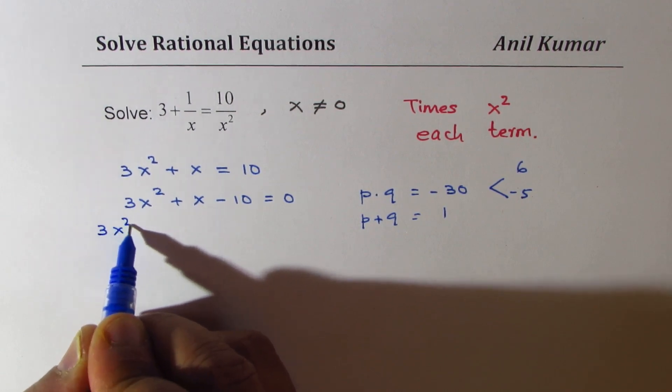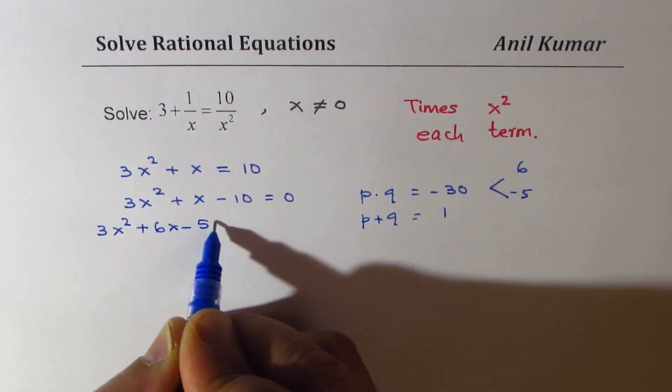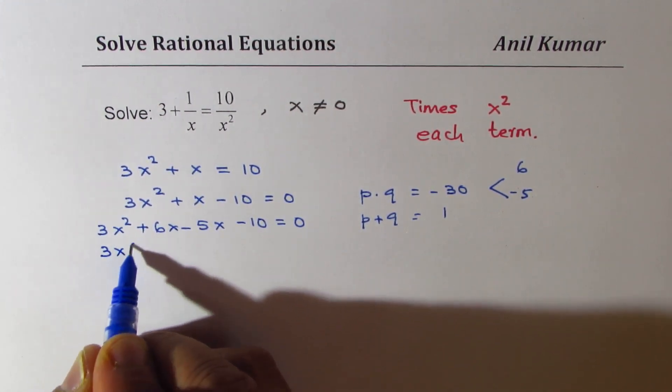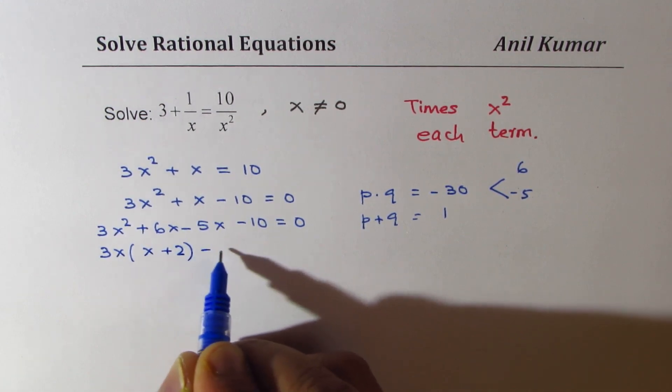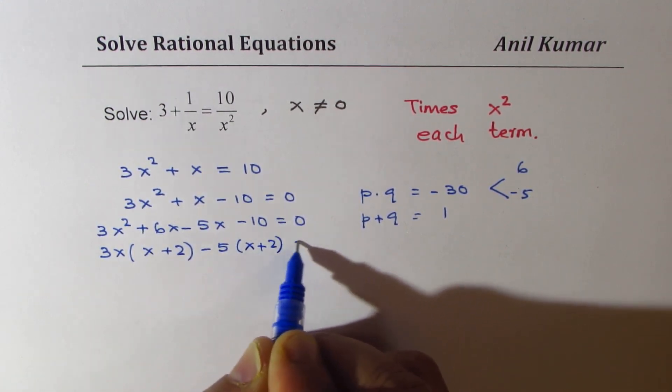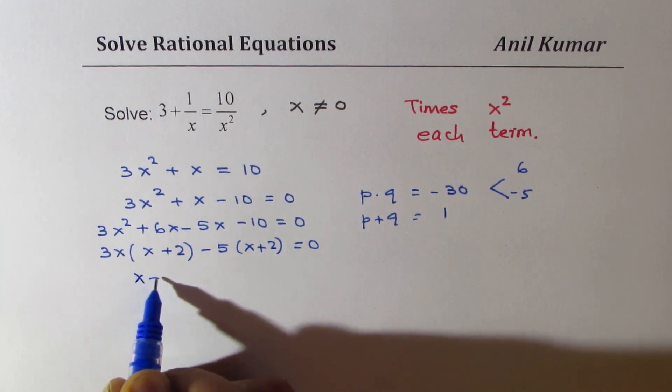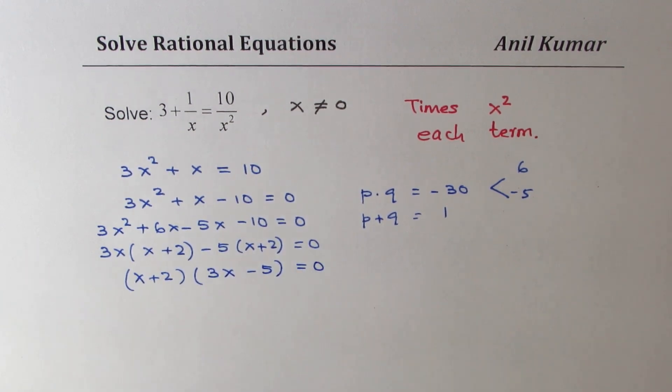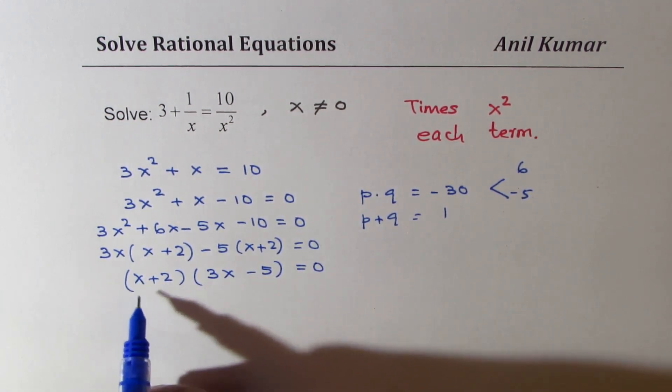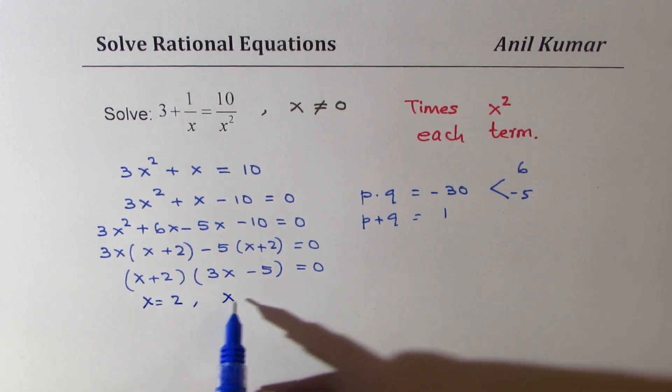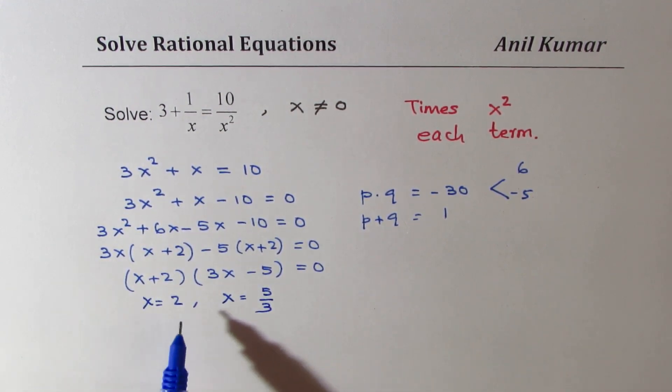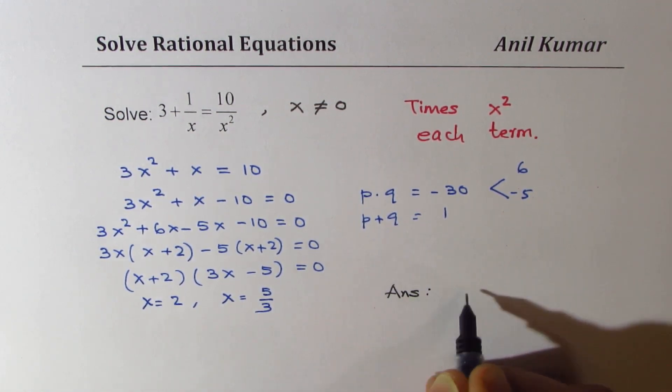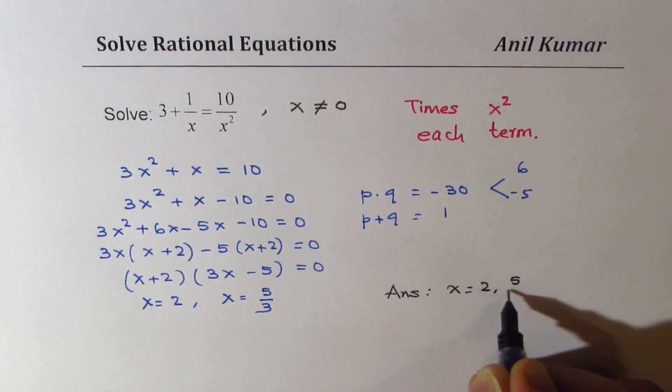...we get 3x squared plus 6x minus 5x minus 10 equals to 0. Now, we could factor 3x, we get x plus 2. Here, we could factor 5, getting x plus 2 equals to 0. Now, x plus 2 is a common factor. We are left with 3x minus 5 equals to 0. Now, this equation is true when x equals to 2 or when x equals to 5 over 3. Now, these are not the restrictions, and so we do get our answer, and the answer is x equals to 2 or 5 over 3.